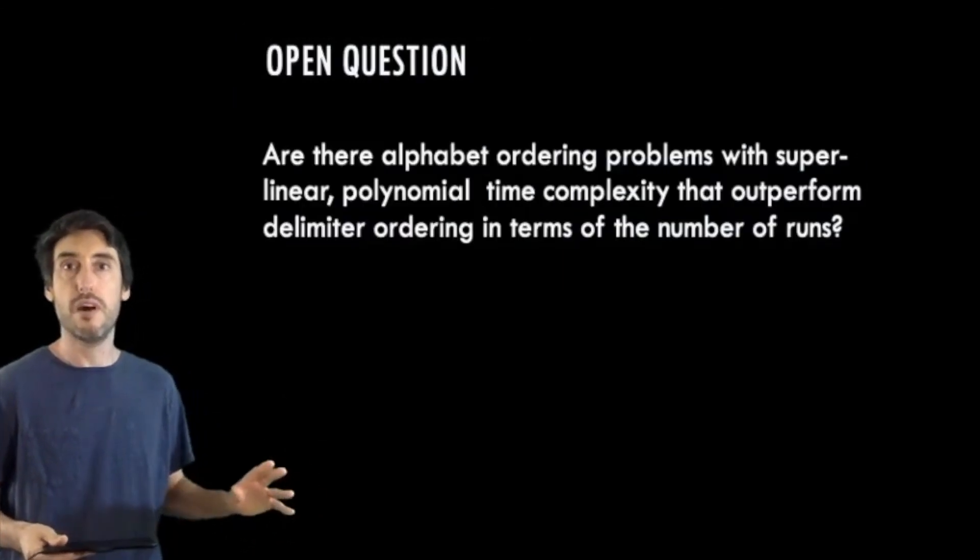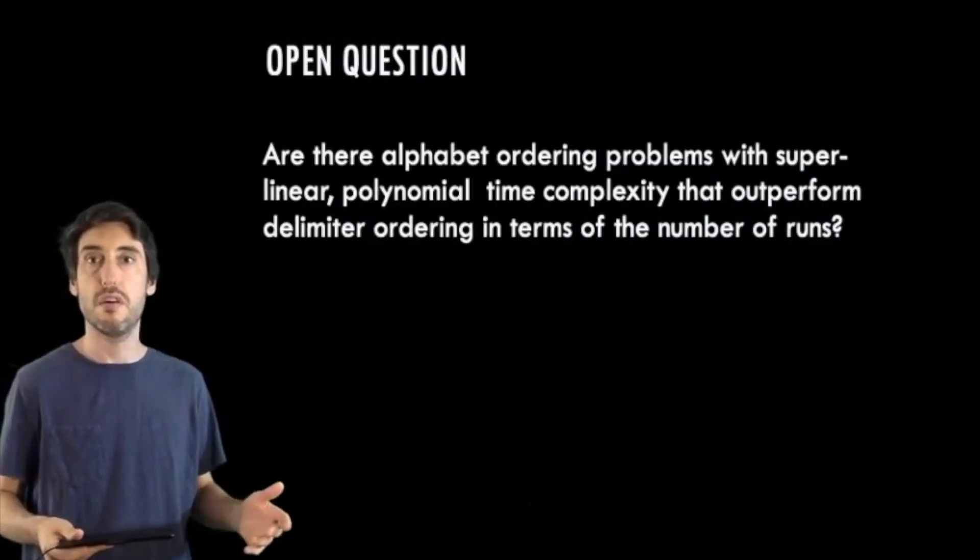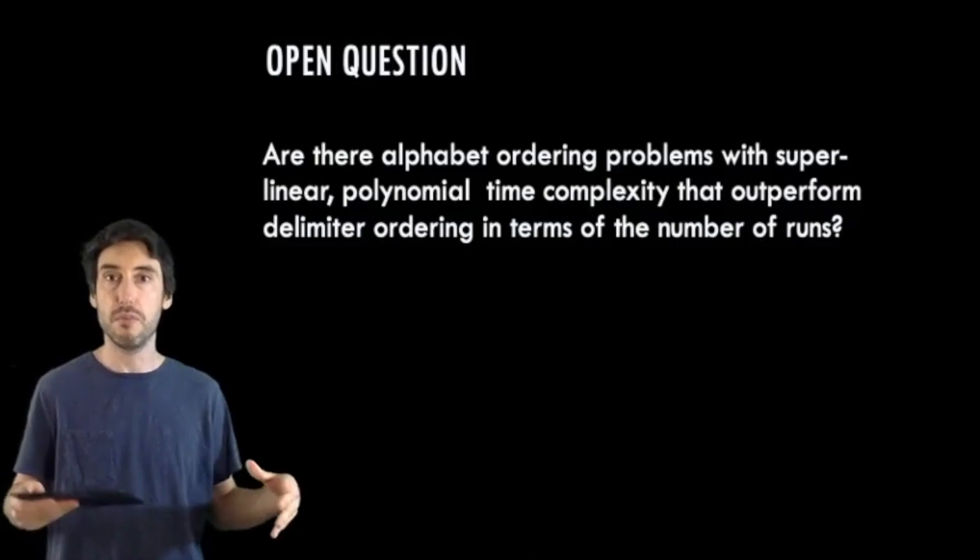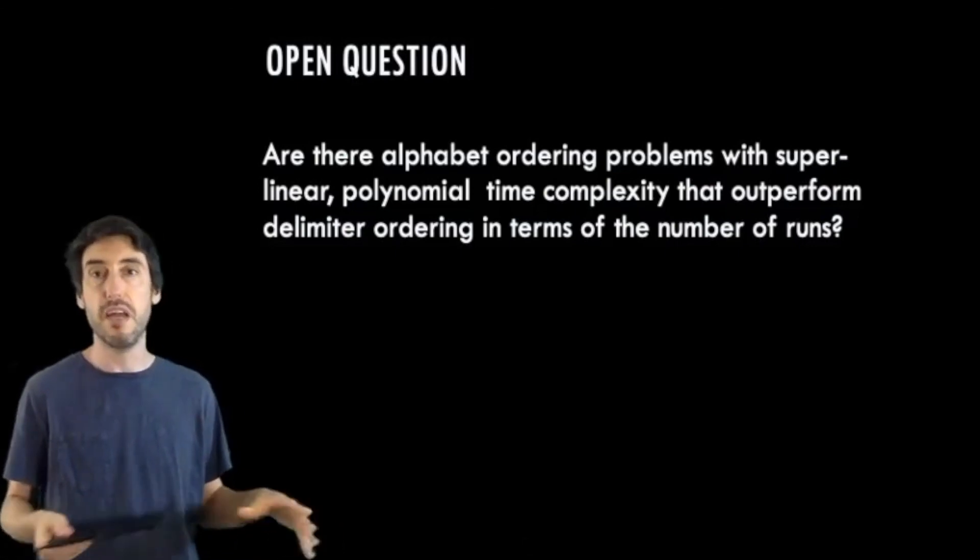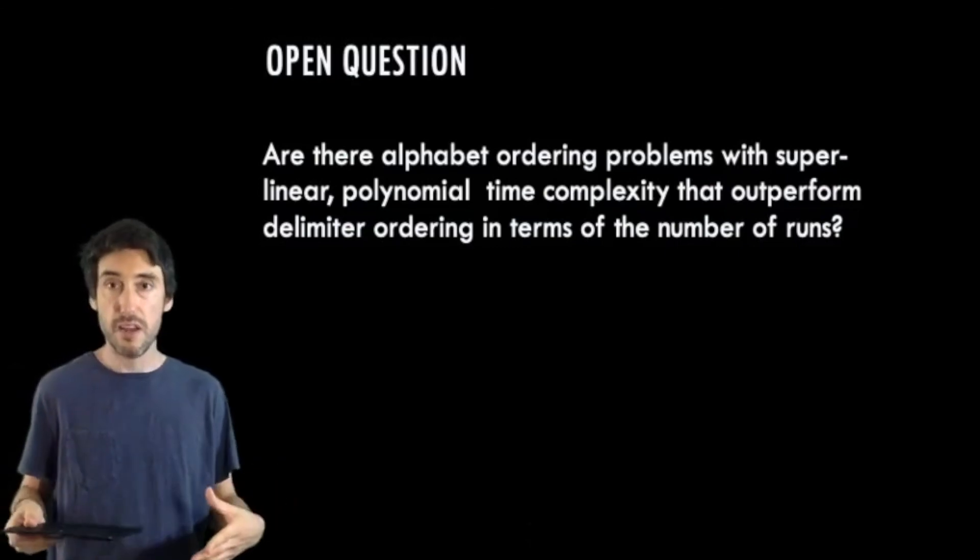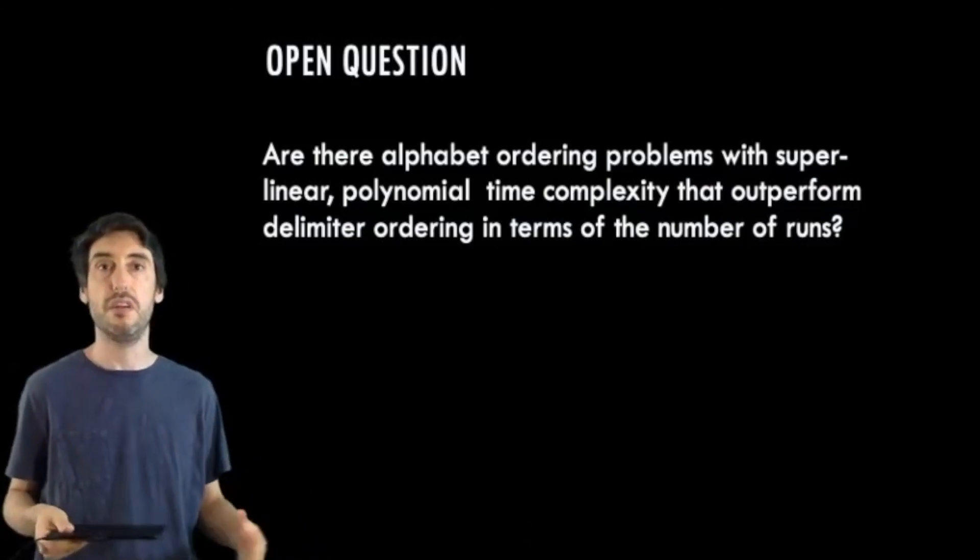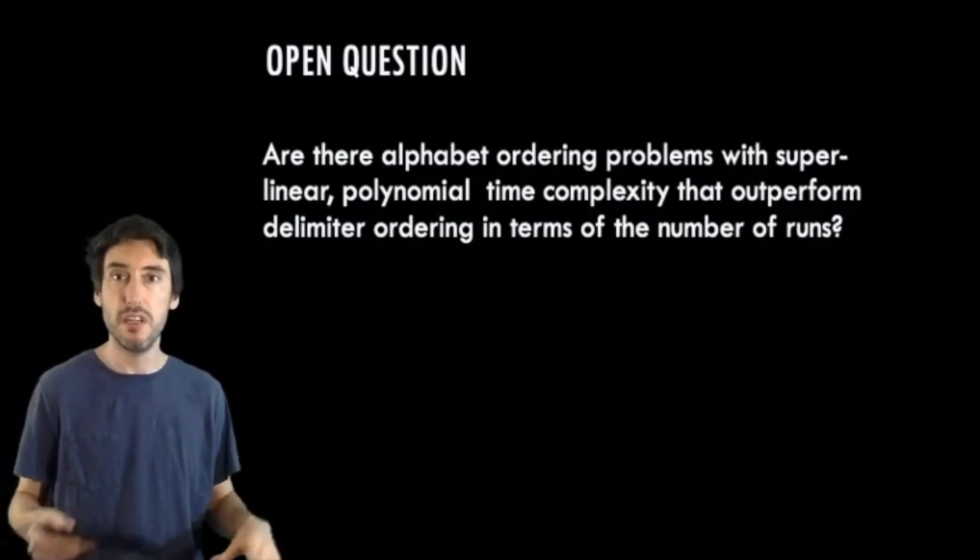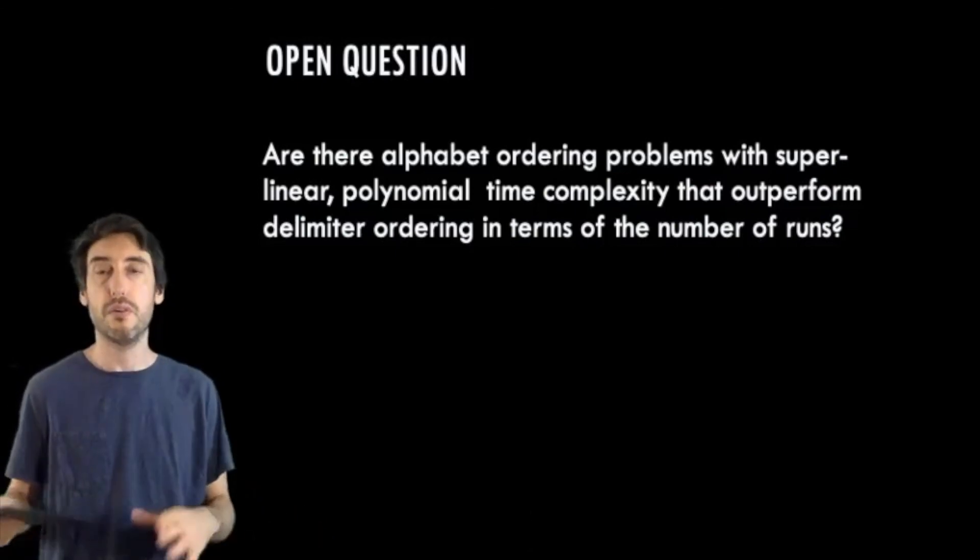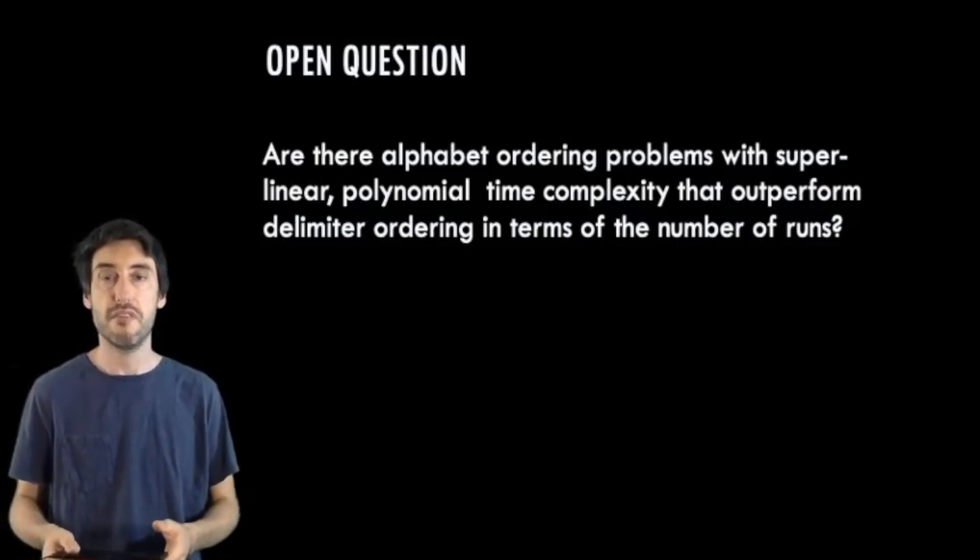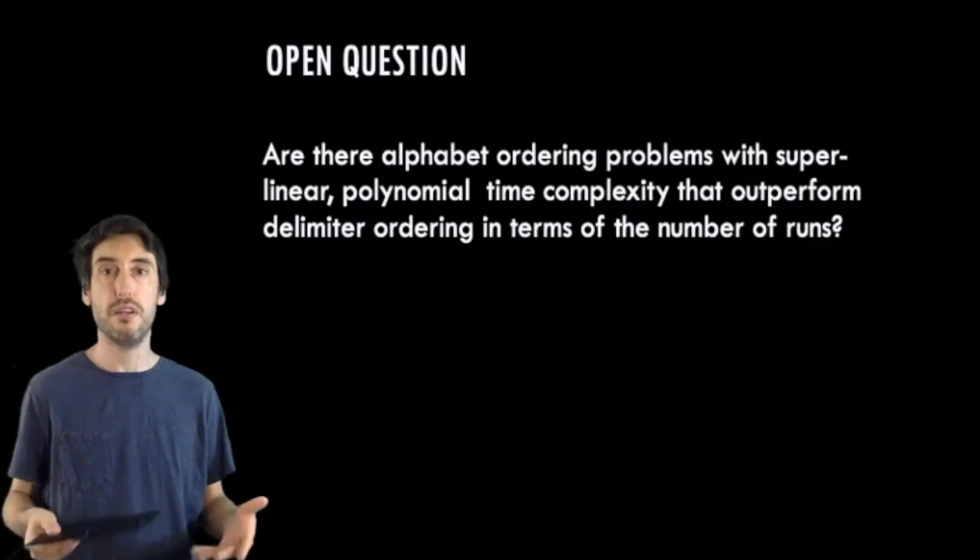But I want to leave you with one final question that our research raised for us. So, we have that alphabet ordering is APX hard, and in that problem, all the symbols can be ordered arbitrarily. We know that these orderings will do at least as well and most likely outperform the number of runs in delimiter ordering. On the other hand, we know delimiter ordering is easy to solve in linear time. So, the question is what problems can we find that are not so easy as to be solved in linear time, but outperform delimiter ordering in terms of the number of runs that we create. This would be something between the two cases that we have considered in this work, and I think that would be interesting to find.